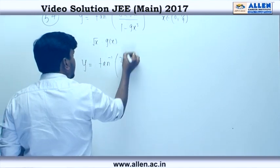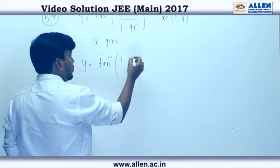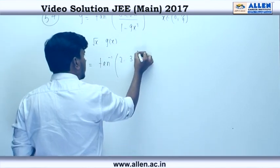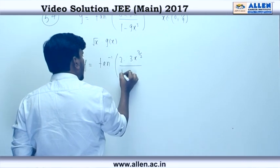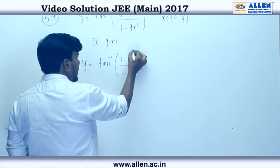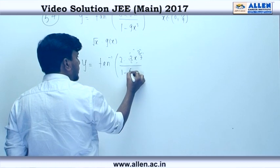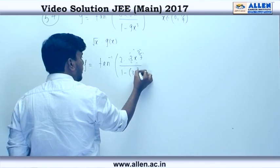This is now 3x root x, 3x power 3 by 2 upon 1 minus, if we square it, this is 3x power 3 by 2 whole square.